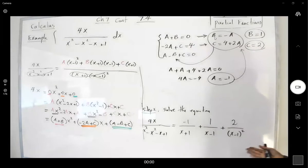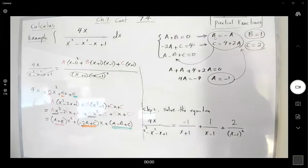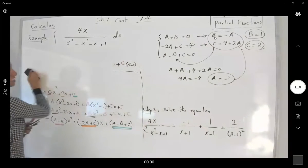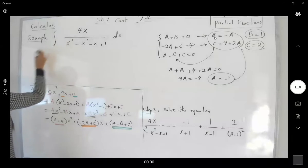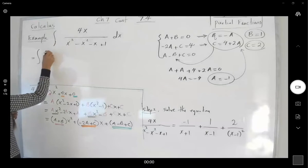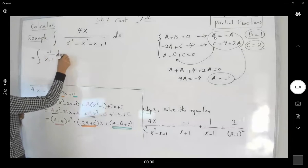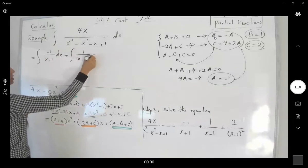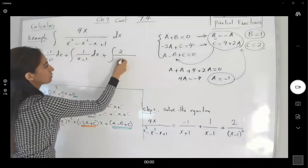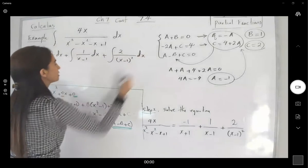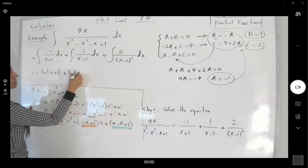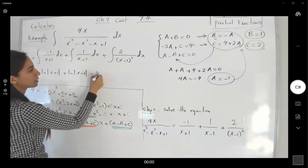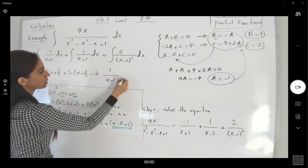Now that we have broken down this fraction into partial fractions, we can easily find the integral. This equals the integral of negative 1 over (x plus 1) dx, plus the integral of 1 over (x minus 1) dx, plus the integral of 2 divided by (x minus 1) squared dx. This gives negative ln|x plus 1| plus ln|x minus 1| minus 2 times 1 over (x minus 1) plus C.